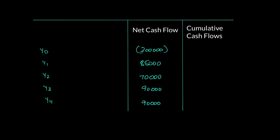The payback period answers a very simple question and is one of the easiest methods to learn. You have to recover 200,000 — when will this firm recover its 200,000? In year one, the firm has recovered or earned 85,000, so in the cumulative cash flow section we can say the firm has recovered 85,000 in total.